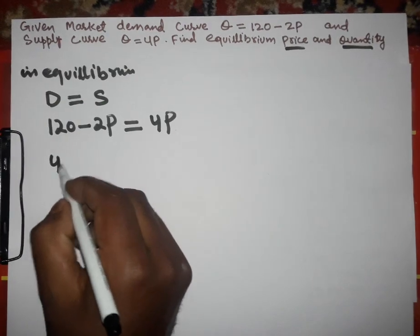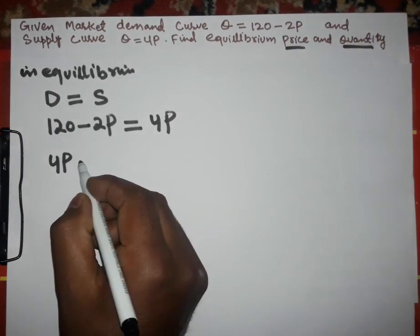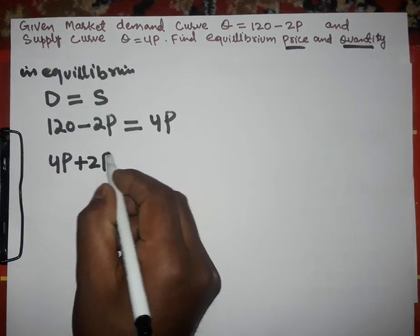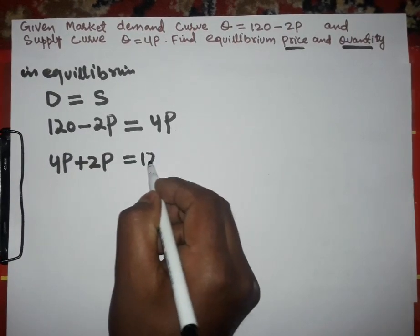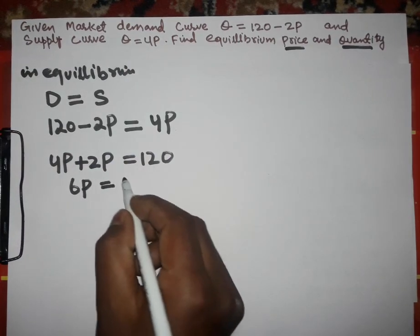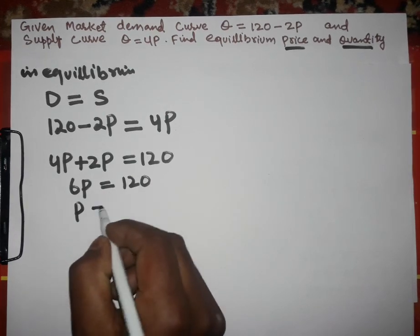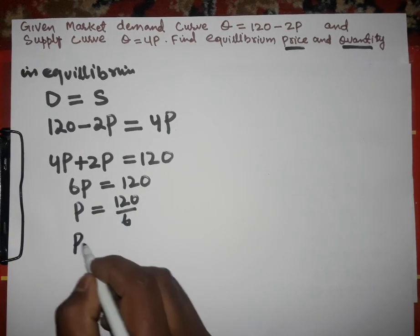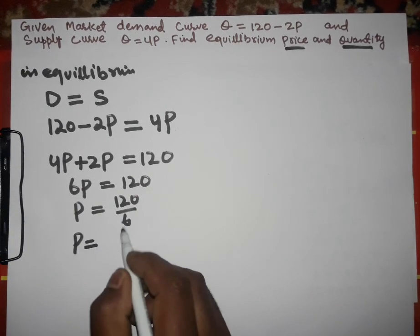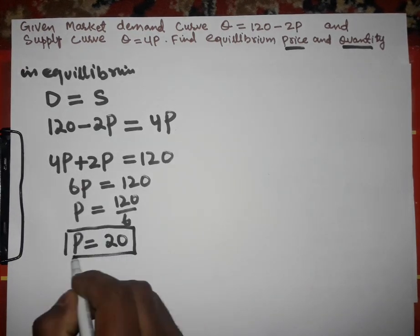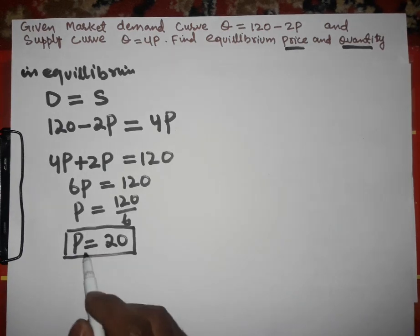We transpose -2P to the other side, so 4P + 2P = 120. This gives us 6P = 120. Therefore P = 120 ÷ 6, which is P = 20. So the equilibrium price is 20.